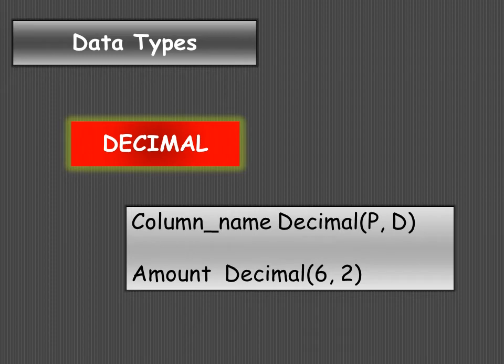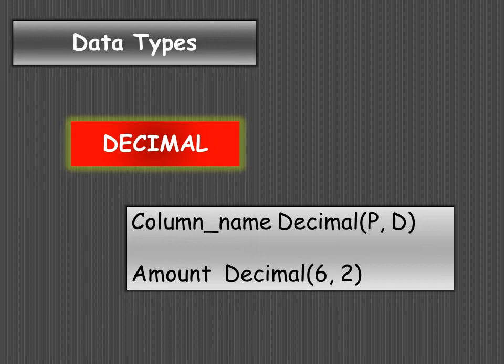DECIMAL data type is used to store exact numeric values in the database and is often used for columns that require exact precision — for example, money data in an accounting system. The syntax is: column_name DECIMAL(p, d), where p is the precision representing the total number of significant digits, and d is the scale representing the number of digits after the decimal point.